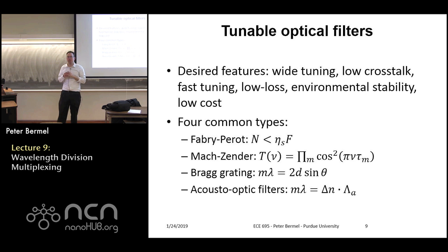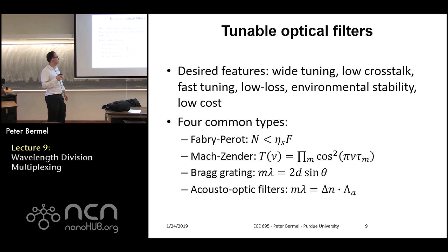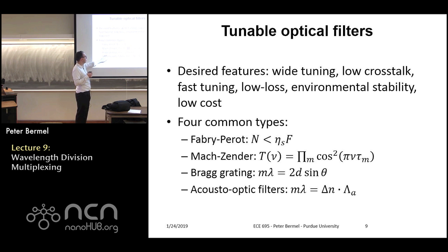The third approach uses a Bragg grating. Bragg gratings rely on the fact that if you have periodicity on a surface, selected wavelengths will be diffracted to different angles. The diffraction angle is controlled by the wavelength and the period of the grating, so you can tune the angle to tune the wavelength, or fix the angle and tune the wavelength. One potential issue is that low-cost Bragg gratings can be sensitive to the environment and may not last as long as other approaches.